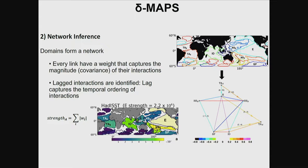Once you have identified the domains, they form a network, and you can establish which links exist between the various components. Those links have a weight linked to the magnitude of their interaction — essentially the covariance between the various domains. You can also identify interactions that are lagged. You take monthly anomalies of SST over 35 or 20 years, whichever you want, and identify lagged interactions between domains.